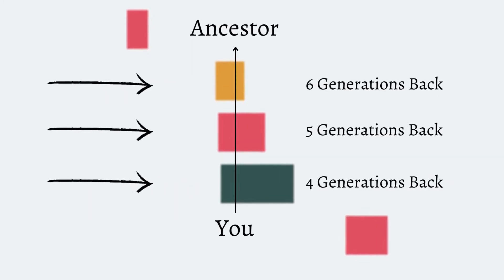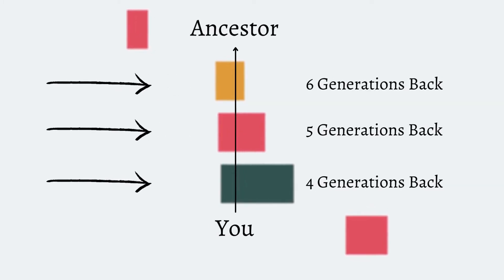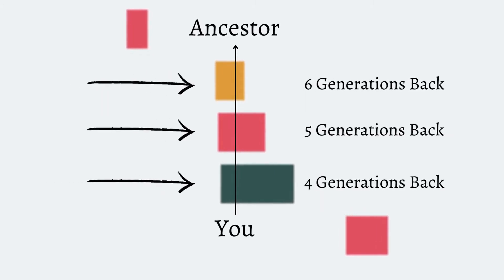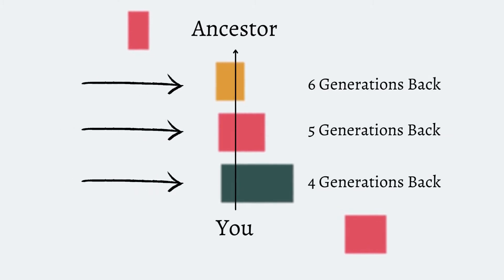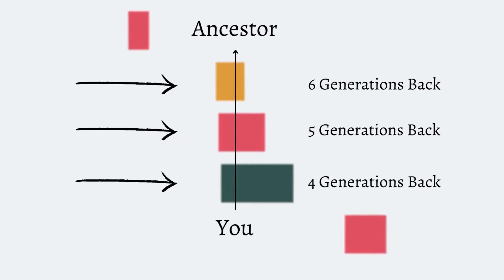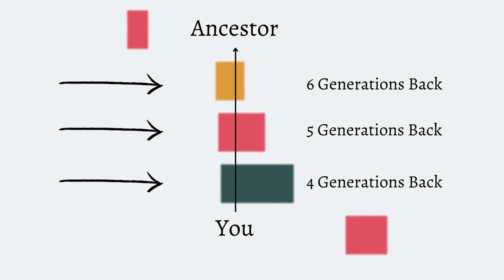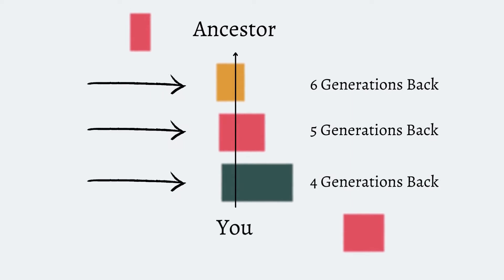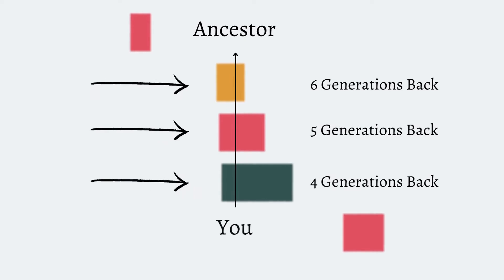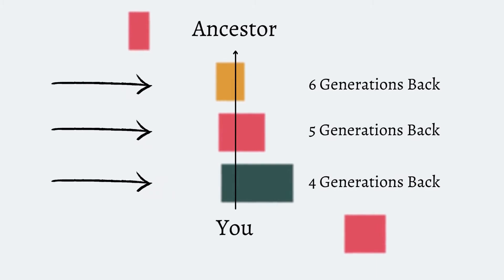For example, you shouldn't be identifying a segment for an ancestor on your paternal side of the family where the segment has otherwise been identified as coming to you via your maternal side of the family — that just doesn't track, unless your mother and father both have the same ancestor. It stands to reason that if you lower the centimorgan threshold and identify a segment for an ancestor 10 to 15 generations back, that same segment should be a recurring segment identified at each generation between you and that ancestor. This is how we verify an ancestor in time with chromosome mapping.